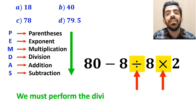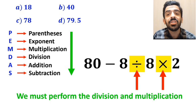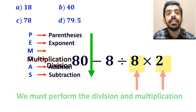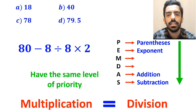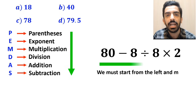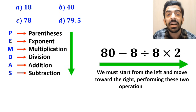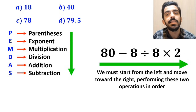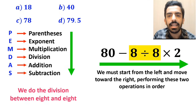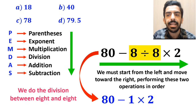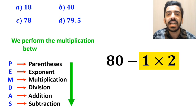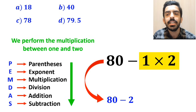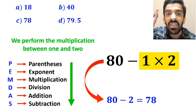Then we must perform the division and multiplication. It's really important to understand that in the PEMDAS rule, multiplication and division have the same level of priority. In this situation, we must start from the left and move towards the right, performing these two operations in order. So first we do the division between 8 and 8, and this expression simplifies to 80 minus 1 times 2. In the final step, we perform the multiplication between 1 and 2, which simplifies this expression to 80 minus 2. Finally, the value of this expression will be 78.